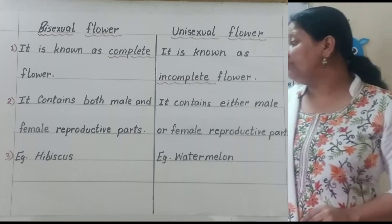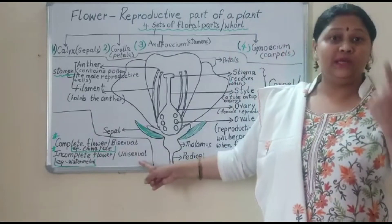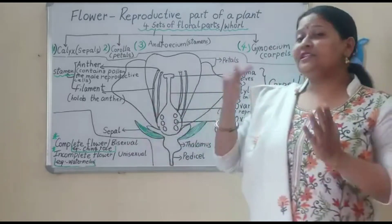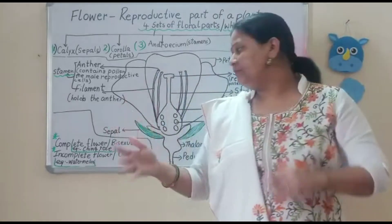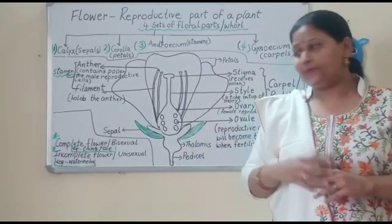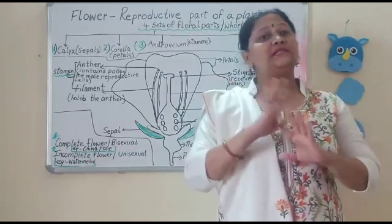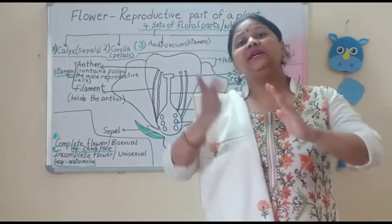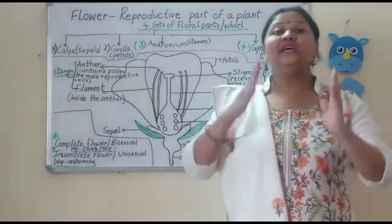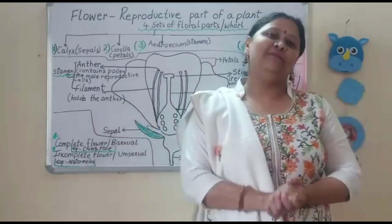Now coming to the incomplete flower, or unisexual flower — the word 'uni' itself means one. One partner is present — that is, either stamen or pistil can be present. Either stamen or pistil (pistil is also known as carpel). So in an incomplete flower, sepals and petals are present, but only either of the partners is present. It is known as a unisexual flower or incomplete flower.